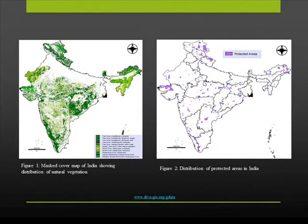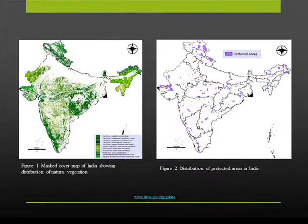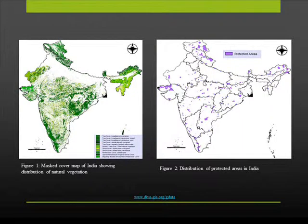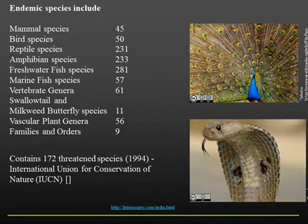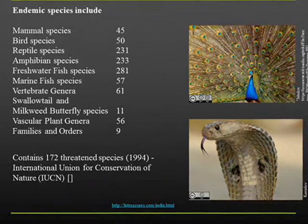There are over 600 protected areas in India. These include 120 national parks, 500 animal sanctuaries, 18 biosphere reserves, reserved and protected areas, conservation and community reserves, village forests, private protected areas, and conservation areas.